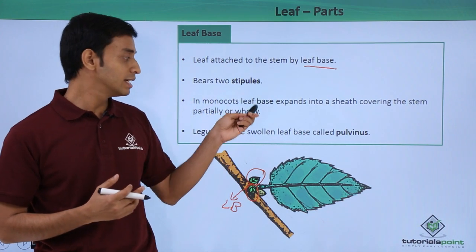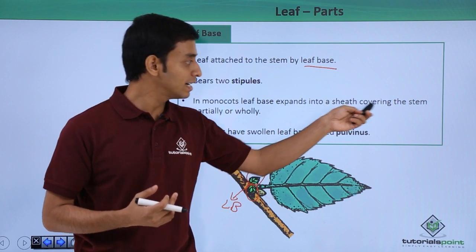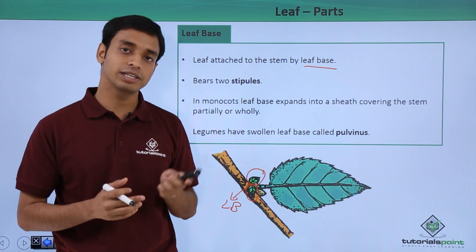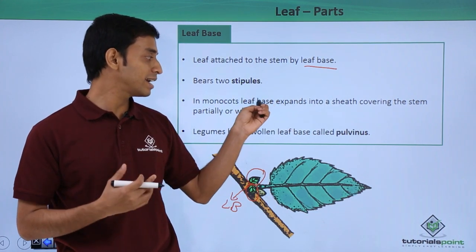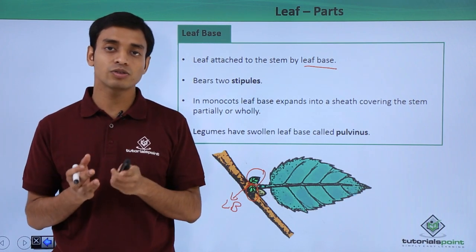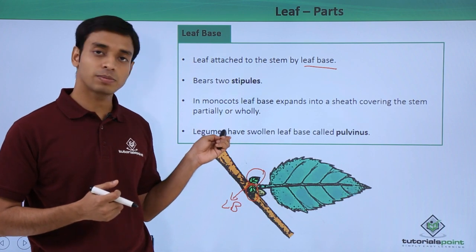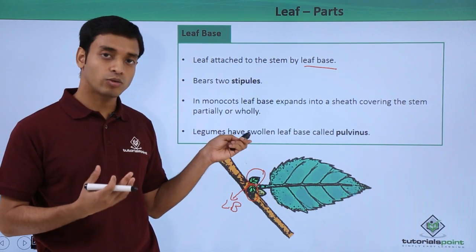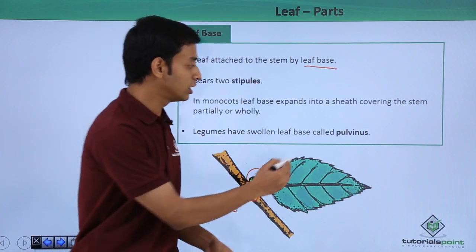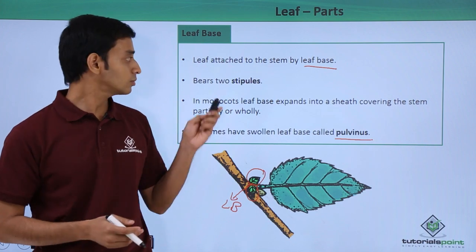In the case of monocot leaves, the base of the leaf can expand into a sheath-like structure and it can wholly or partially cover the stem because of the expanding of the leaf base. In some leguminous plants — which have nitrogen-fixing capabilities — they have swollen leaf bases, and these swollen leaf bases are known as the pulvinus.